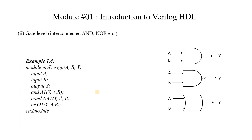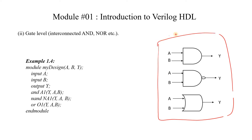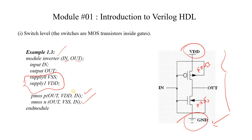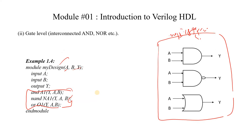At the gate level, suppose we are given a top-level design called my_design, which contains three logic gates: one AND gate, one AND gate, and one OR gate. The inputs are A and B and the output is Y. In the Verilog HDL code we directly instantiate these gates in our design — this is gate level modeling. In switch level modeling we instantiate switch primitives like PMOS or NMOS; in gate level modeling we instantiate logic gates.